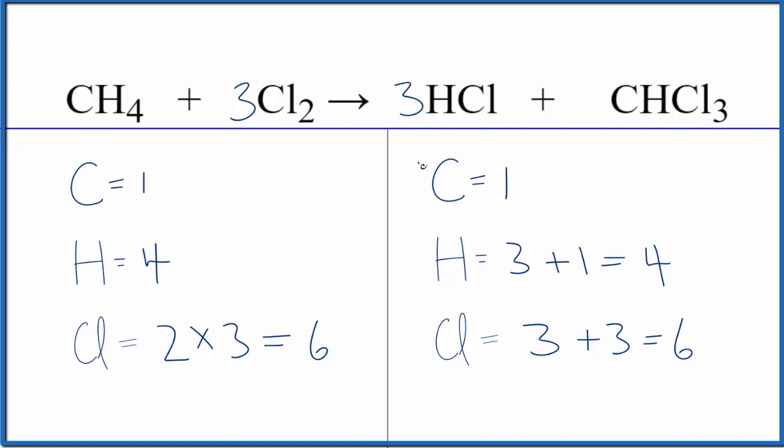The key here, be very careful in how you count the number of atoms up on each side. If you wanted to know the states, they'd look like this. This is Dr. B with the balanced equation for CH4 plus Cl2 yields HCl plus CHCl3. Thanks for watching.